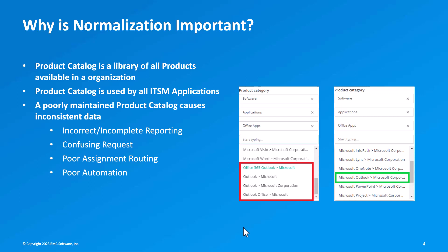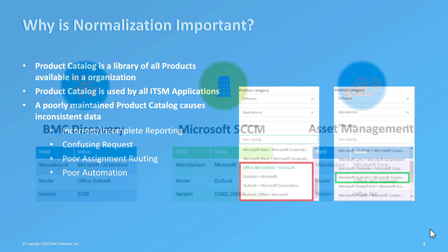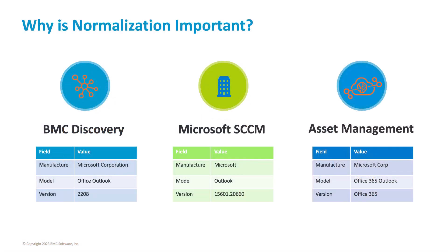In this screenshot, a user wants to create an incident or change request on Microsoft Outlook, but while selecting the product they see duplicates — like 'Microsoft Outlook' and 'Microsoft Corporation Outlook' — making it difficult to select the correct one. Normalization helps normalize the product catalog so you see only one Outlook entry. Also, SSM might bring a software CI with model name 'Outlook' while the same application from discovery may come as 'Office Outlook'.